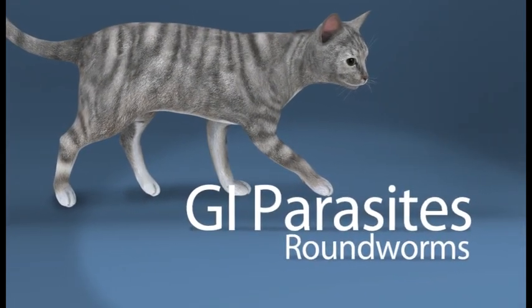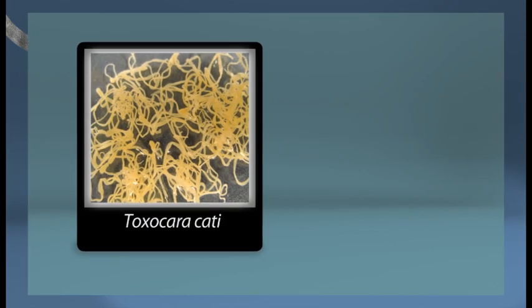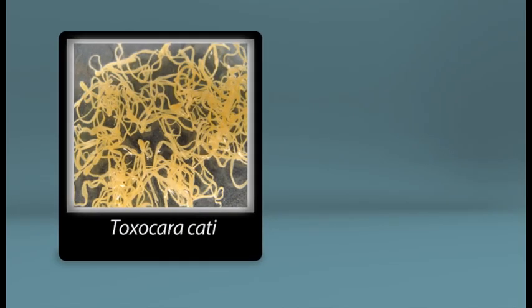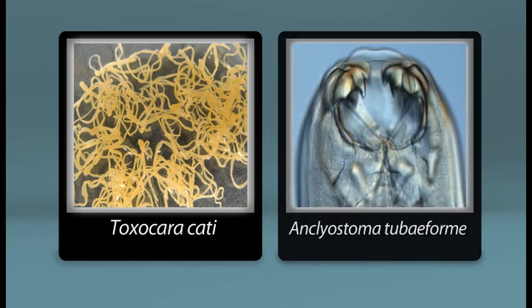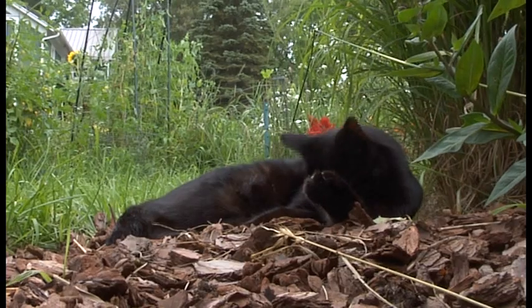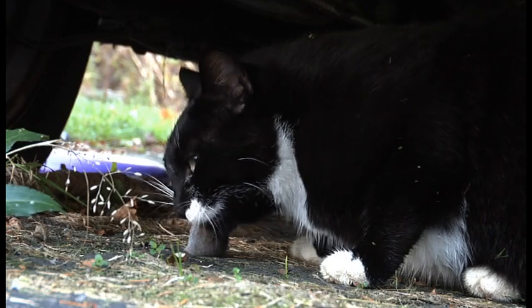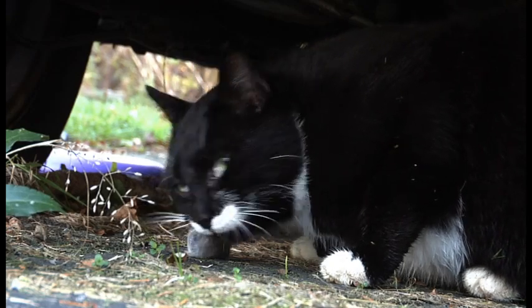Roundworms are a group of intestinal parasites that commonly infect the gastrointestinal tract of cats. The most common species in cats are Toxocara cati, commonly known as roundworm, and Ancylostoma tubaeforme, commonly known as hookworm. Cats may become infected with Toxocara cati by ingesting the parasite's eggs from the environment, or by ingesting birds or rodents that have eaten these eggs.